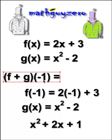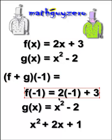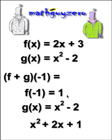Every time you see an x from f(x), you're going to substitute it with negative one. Do some math. So f(-1) equals 2(-1) + 3, which is one.